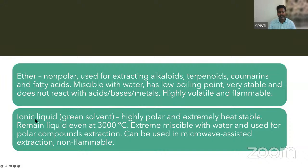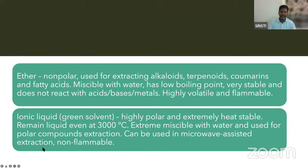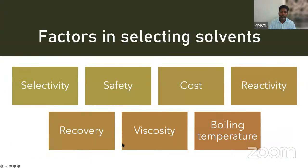Ionic liquid or green solvent is highly polar and extremely heat stable, remaining liquid even at 300 degrees Celsius. It is extremely miscible with water and used for polar compound extraction. It can be used in microwave-assisted extraction and is also non-flammable. Before going into the extraction process, there are several factors that determine which solvent you are going to choose.